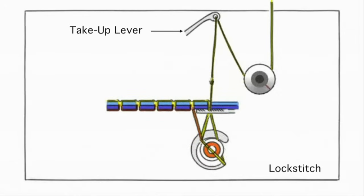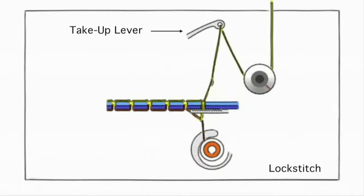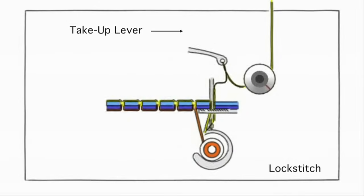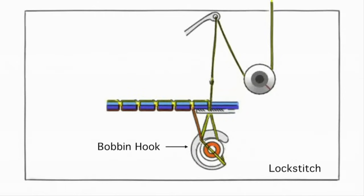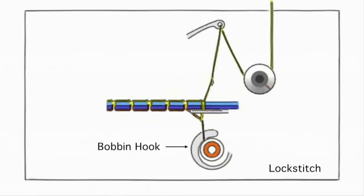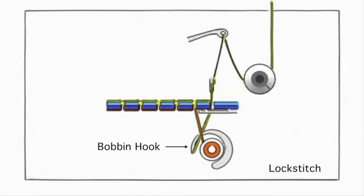This is the take-up lever. It moves back and forth. It releases the tension on the thread so that the bobbin hook can grab it and make a loop that goes around the bobbin.